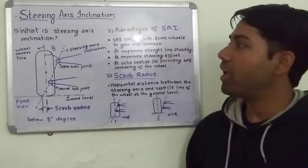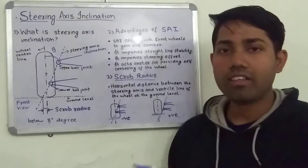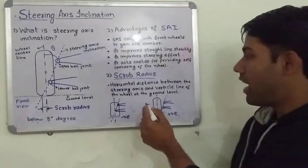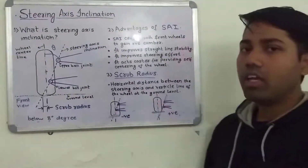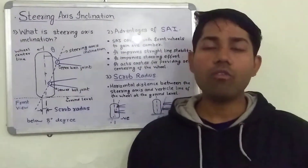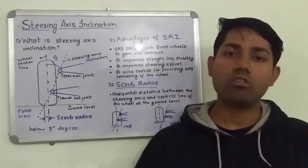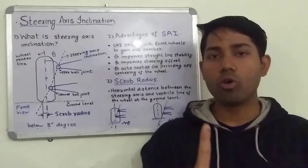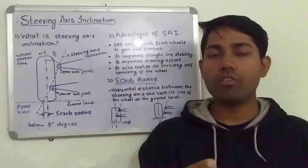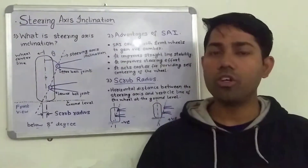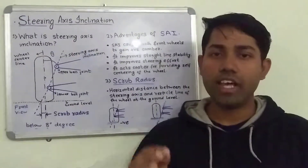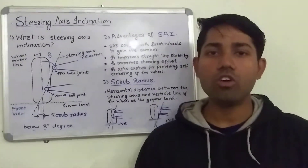In this video I have explained about the steering axis inclination and scrub radius. In my coming video I am going to explain about the difference between a monotube shock absorber and a twin-tube shock absorber. Thanks for watching this video.